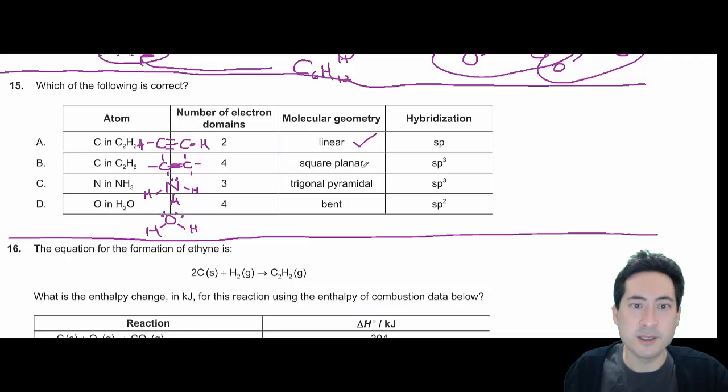And so that one is linear. Square planar, square planar is going to have to be like an X thing, so we can manage to cross out, cross out one at least. That's trigonal planar, okay so that was able to get rid of one of them for us.